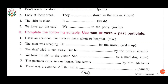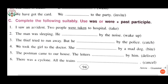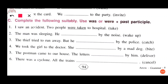The last question (C): complete the following suitably using 'was' or 'were' with the past participle — that is the third form of the verb given in the bracket. For more than one person we use 'were,' and for he/she/singular we use 'was.' First: 'I saw an accident — two people were taken to the hospital.'